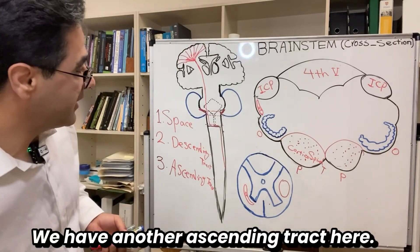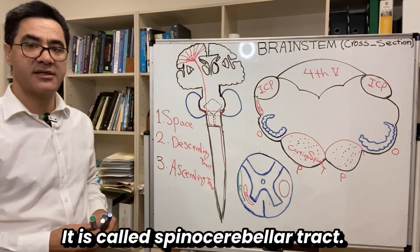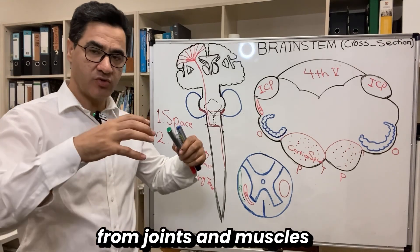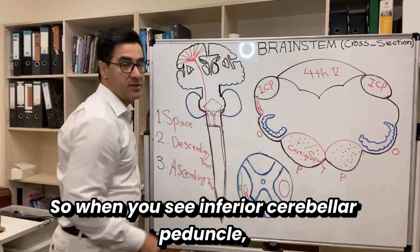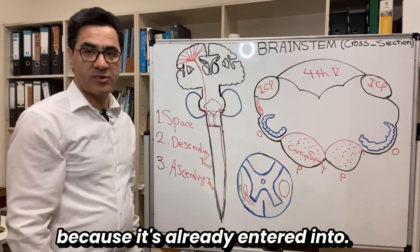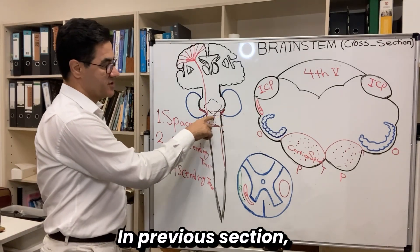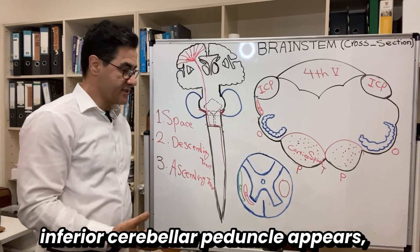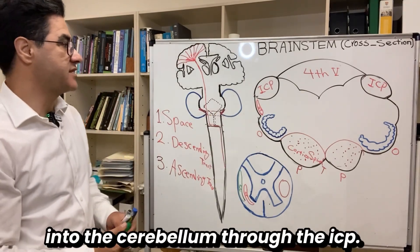We have another ascending tract called the spinal cerebellar tract. It carries sensory information related to unconscious proprioception from joints and muscles to the cerebellum. When you see the inferior cerebellar peduncle, it means the spinal cerebellar tract has disappeared, because it has already entered the cerebellum through the inferior cerebellar peduncle. When the ICP appears, the spinal cerebellar tract disappears.